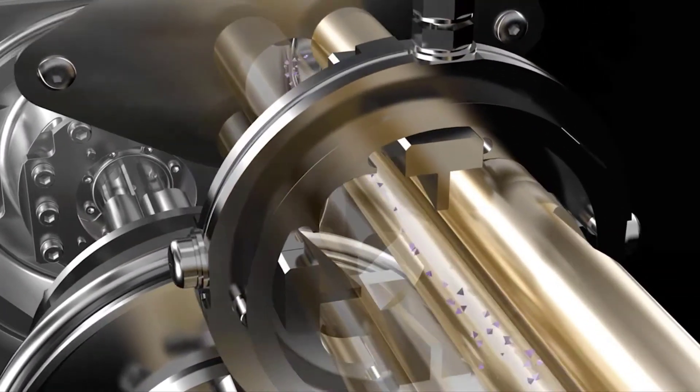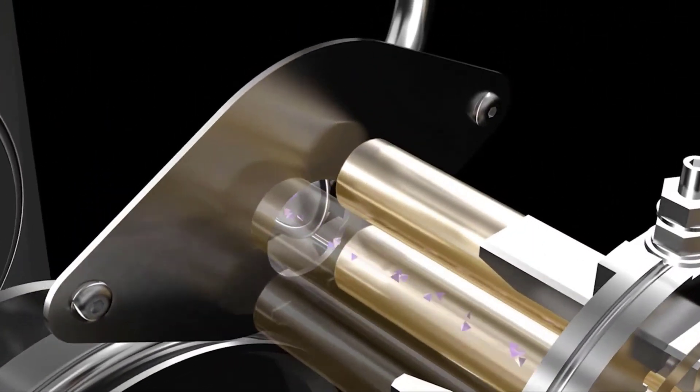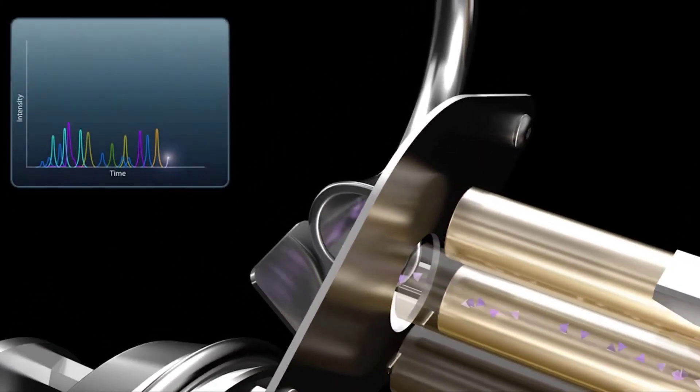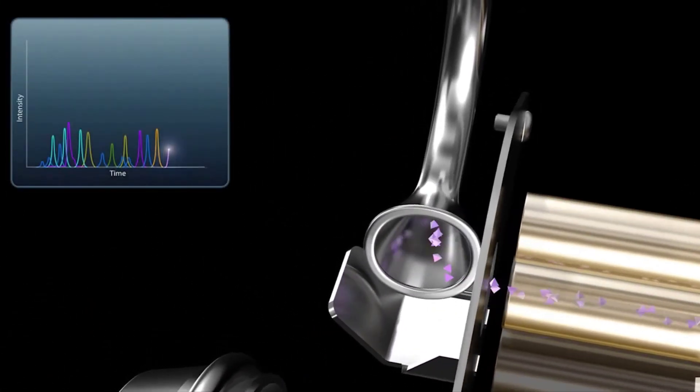Once separated, the ions hit the detector. The detector will amplify the signal and send it to the workstation for converting the information to a mass spectrum.